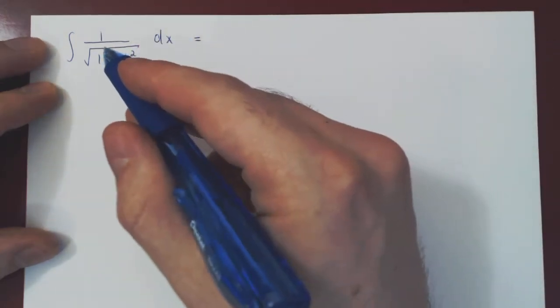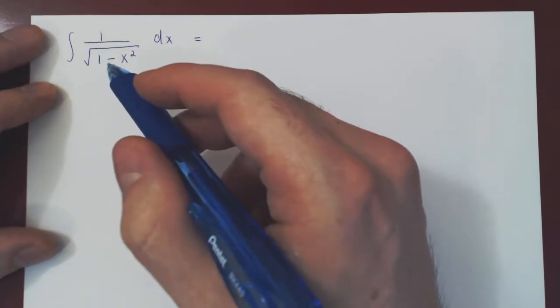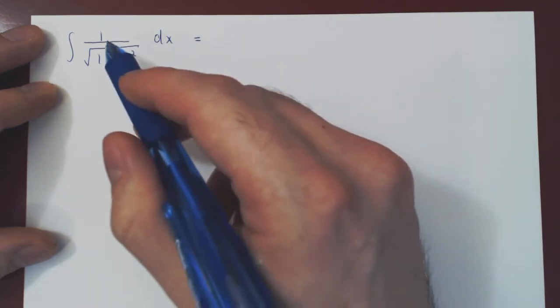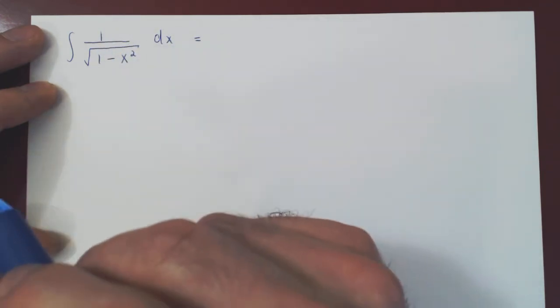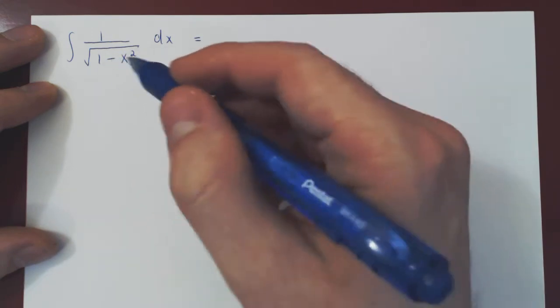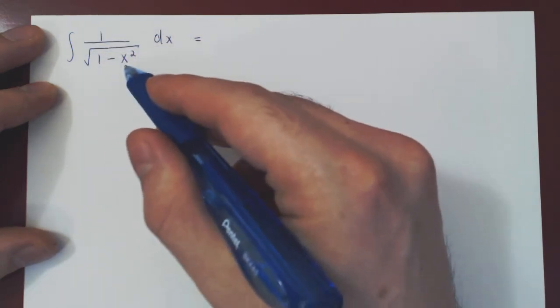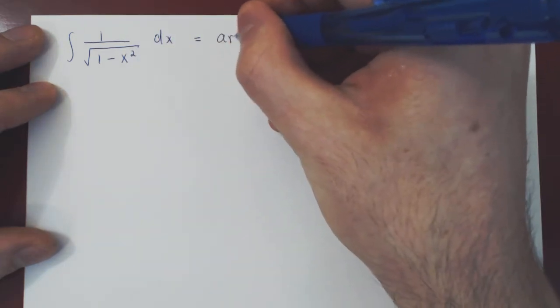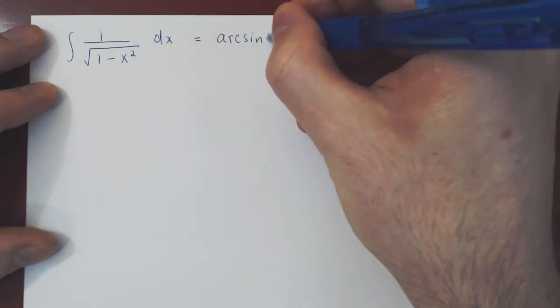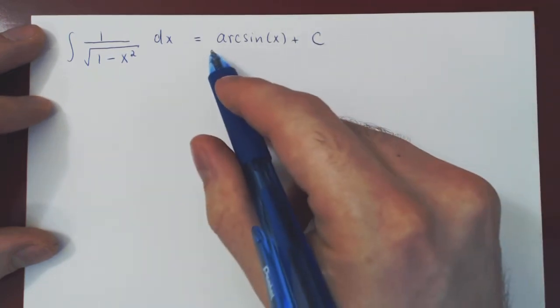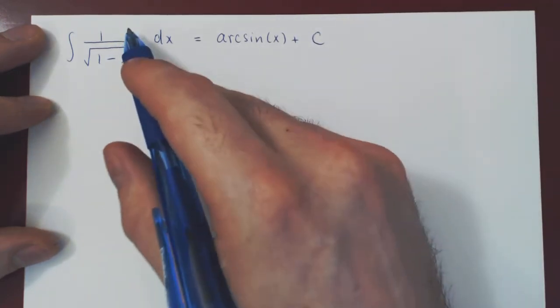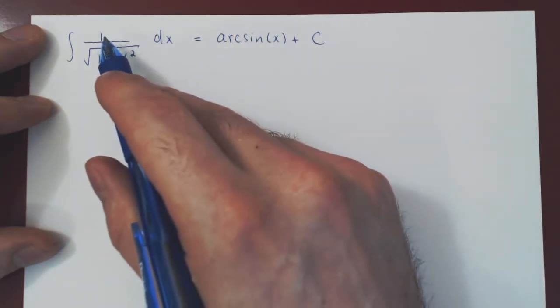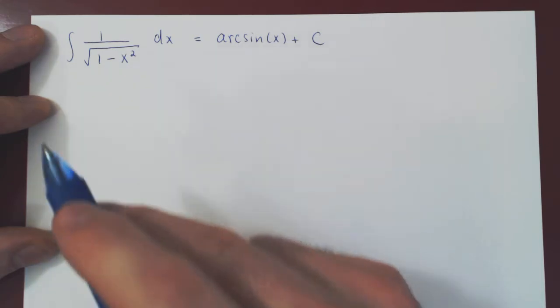Remember that the integral is simply asking for an antiderivative. Do we know a function whose derivative with respect to x is 1 over the square root of 1 minus x squared? Hopefully you remember that the derivative of arc sine of x is exactly this expression. So all this is is arc sine of x plus C. Arc sine is an antiderivative of 1 over root of 1 minus x squared because the derivative of arc sine is 1 over the root of 1 minus x squared.